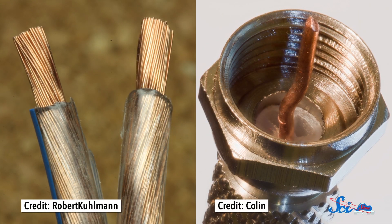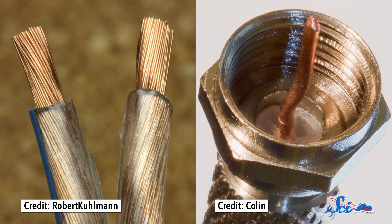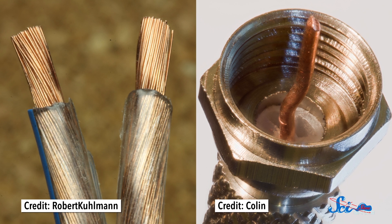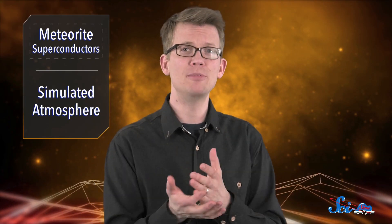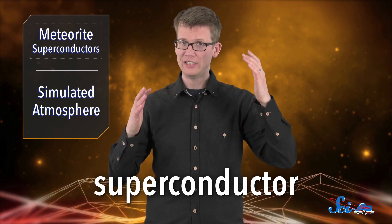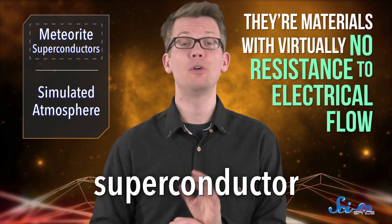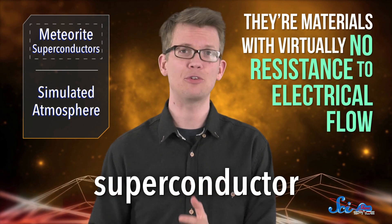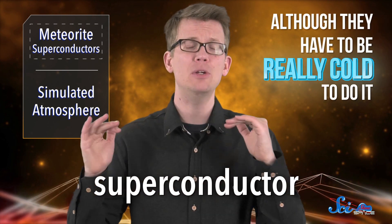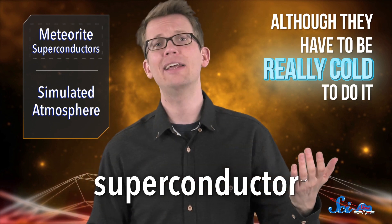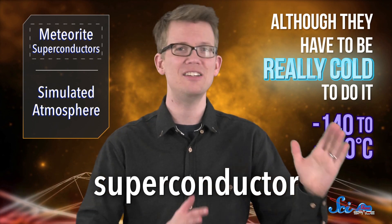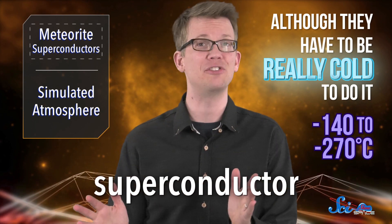Normally, when electricity flows through a conductor, like a copper wire, the conductor resists that flow and some of the energy is lost to heat. This means most machines that use conductors aren't totally efficient. Superconductors can get around this problem. They're materials with virtually no resistance to electrical flow, although they have to be really cold to do it, like anywhere from negative 140 to negative 270 degrees Celsius.